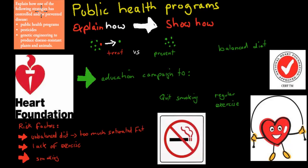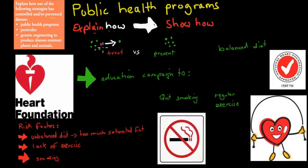The next dot point asks you to explain how one of the following strategies has controlled and/or prevented disease — specifically how public health programs have prevented disease. First of all, what is prevention? If we talk about treatment, that means one person is ill and we give them treatment and they become healthy again. Whereas prevention means we try to avoid anyone from actually becoming ill — so prevention means no one becomes ill.